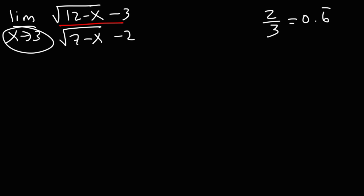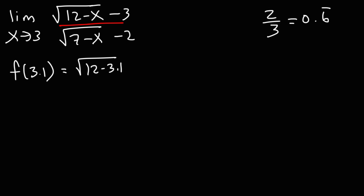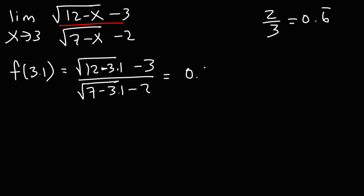So as x approaches 3, we want to plug in a number that's very close to 3. Let's say this is f(x) and evaluate it at 3.1. So this is going to be the square root of 12 minus 3.1, minus 3, divided by the square root of 7 minus 3.1, minus 2. Plugging this into a calculator, I got 0.6643241271, which is close to 0.6 repeating.